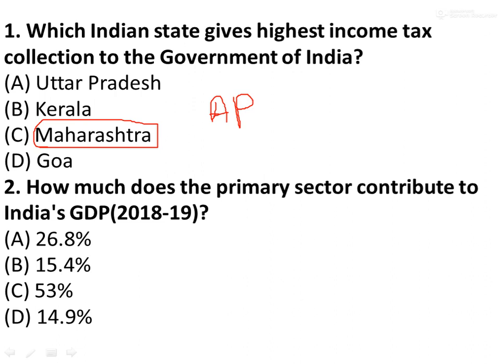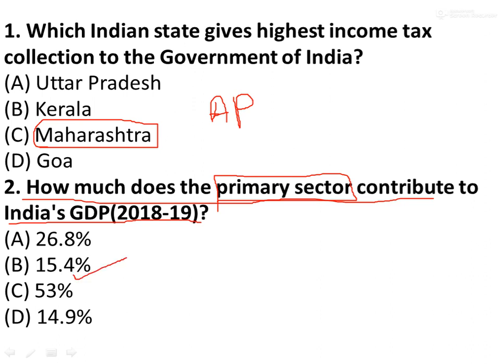The next question was: how much does the primary sector contribute to India's GDP in 2018? As I discussed earlier, the primary sector is the sector related to extraction and agriculture — raw materials. So the answer is 15.4%.